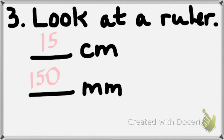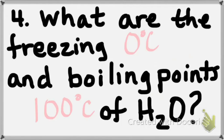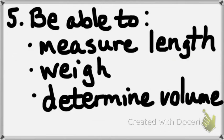Question number four: I need the freezing point of water on the Celsius scale — zero. I need the boiling point of water on the Celsius scale — one hundred. You have to know that, and that does assume we're at sea level. Number five is skills, and there are going to be a lot of questions on your ability to do skills.